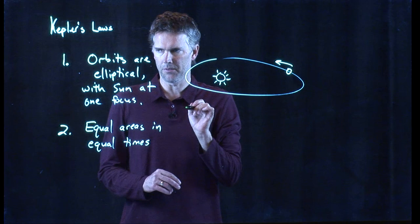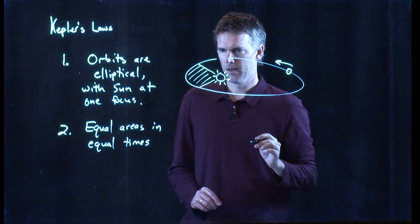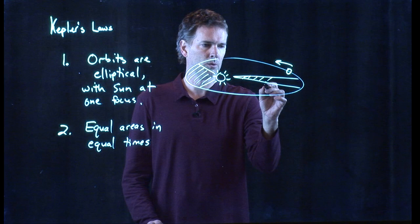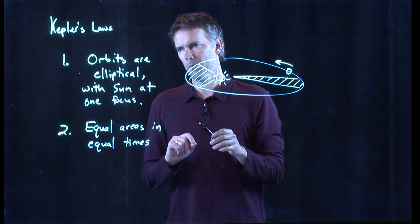What it means is, as this planet sweeps out this ellipse about the Sun, if I take a stopwatch and I measure how far it moves in some amount of time, and then I shade that area, I would get some number. But if I take the stopwatch and I do the same amount of time at the far end of its elliptical orbit, and I map out that area, I get the exact same number.